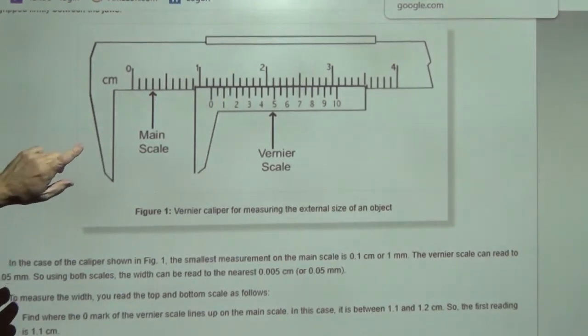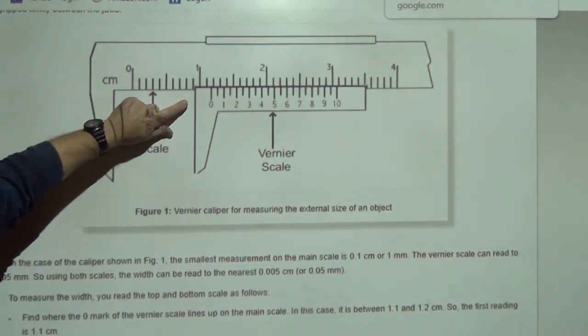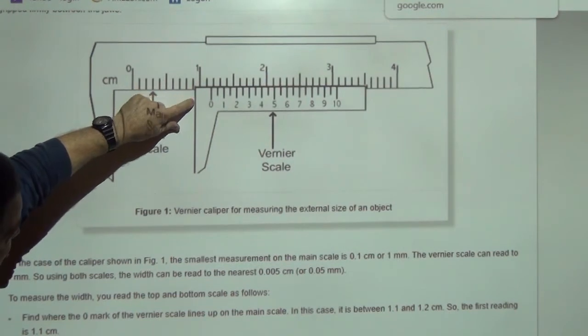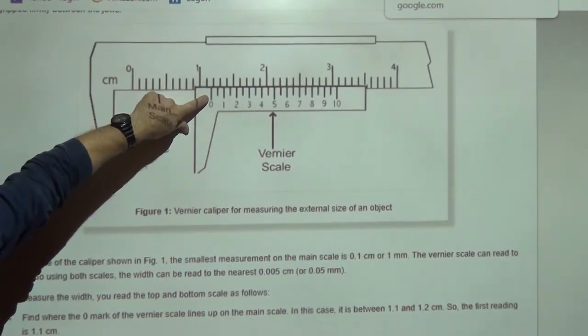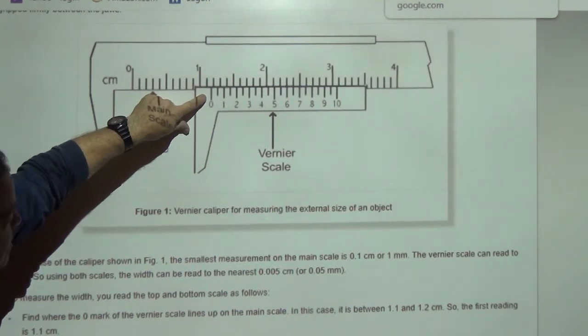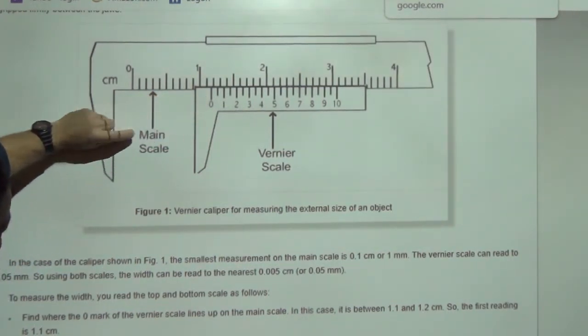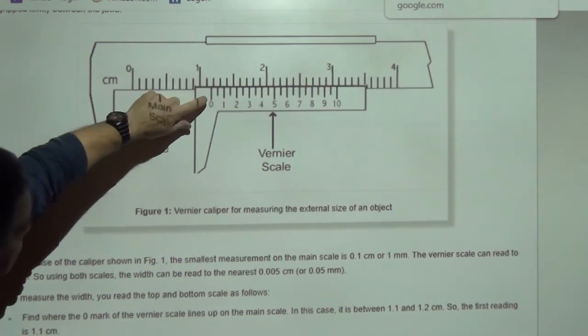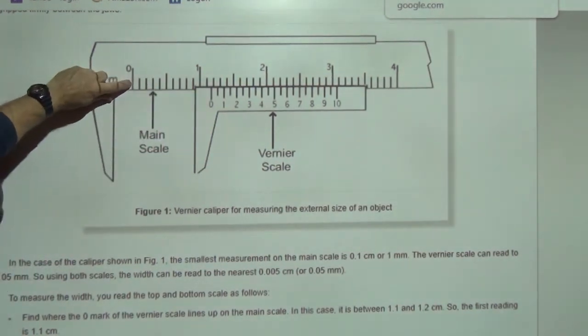And you have to be careful here that you don't try to read the scale starting at this edge of the jaw. You have to start from the zero. Now the thing is made so that when this jaw is tight against this jaw, that zero lines up with that zero.